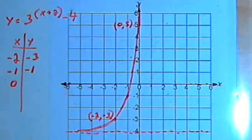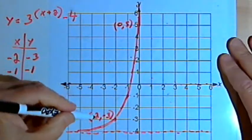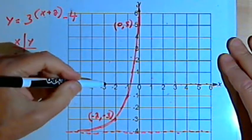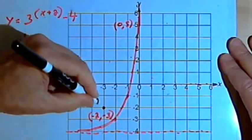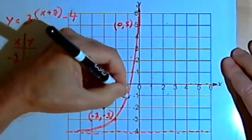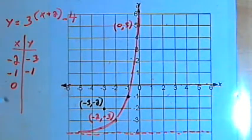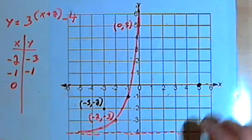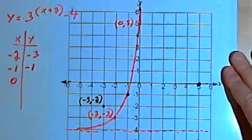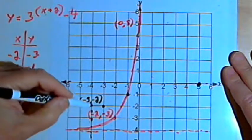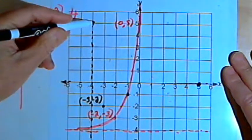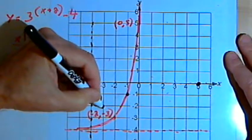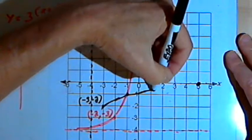Now let's draw the inverse. I want to take the points I've got here and swap the x and y values. So instead of a point at negative 2, negative 3, I should have something at negative 3, negative 2. I have a point at negative 1, negative 1 — that stays the same when I swap the points. I've got a point at 0, 5, so I'll have an x-intercept at 5, 0. And where I have a horizontal asymptote at y equals negative 4, I'll create a vertical asymptote at x equals negative 4.